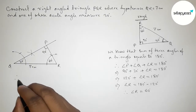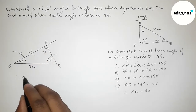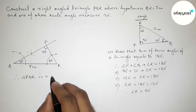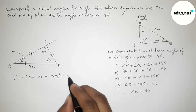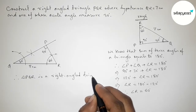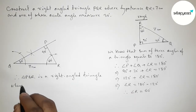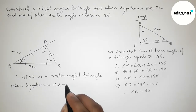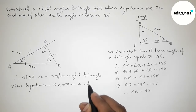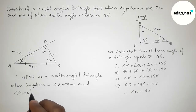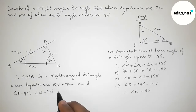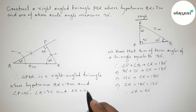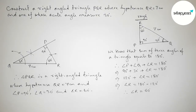Therefore, triangle PQR is a right angled triangle where the hypotenuse QR equals 7 centimeters, angle Q equals 30 degrees, and angle R equals 60 degrees. By this way you can construct this right angle triangle PQR in an easy way. That's all — thanks for watching, please share it.